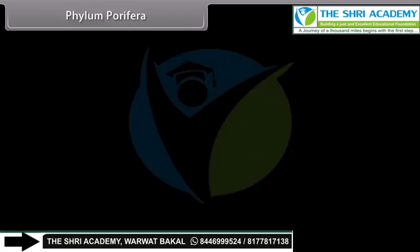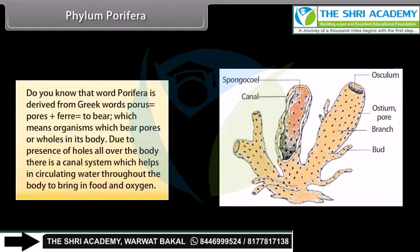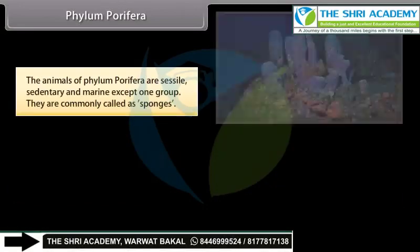Phylum Porifera. The word Porifera is derived from Greek words: porous, meaning pores, plus pherae, meaning to bear — which means organisms which bear pores or holes in their body. Due to the presence of holes all over the body, there is a canal system which helps in circulating water throughout the body to bring in food and oxygen. The animals of phylum Porifera are sessile, sedentary, and marine except one group. They are commonly called sponges.